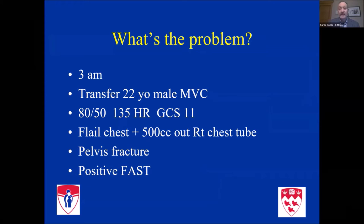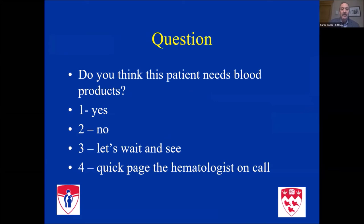What's the problem with trying to do that? Typical practice is your 3am trauma: 22-year-old male, motor vehicle crash, blood pressure 80 over 50, significantly tachycardic, altered Glasgow coma score, flail chest, blood from the chest, pelvis fracture, and a positive FAST. You have multiple potential sources of hemorrhage in this very unwell patient. What are you going to do? Does this patient need blood products? Yes — hopefully yes.